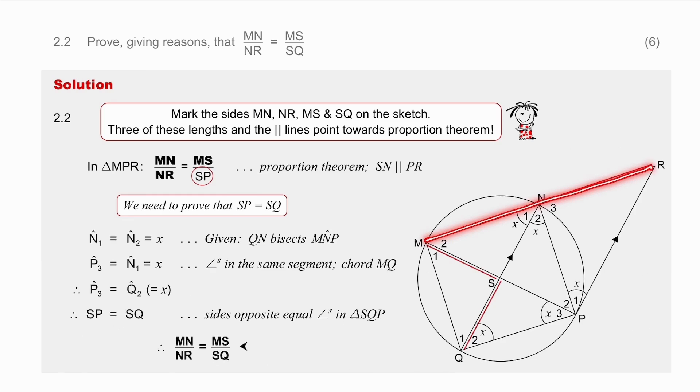So what I'm going to try and do is prove that SP and SQ are equal. In triangle MPR use the ratio and proportion theorem and you can say MN over NR is equal to MS over SP because of the proportion theorem. And notice your parallel lines in that triangle it's SN parallel to PR. So you must use the parallel lines that are in the triangle you're working in.